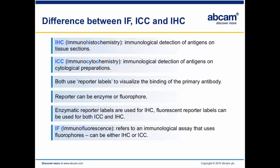I wanted to take a minute to talk about the difference between IHC, immunohistochemistry, and immunofluorescence. A lot of those terms get thrown around and I want to make it clear which is referring to which. When you see IHC, this is immunohistochemistry, and histochemistry involves immunological detection of antigens on a tissue section. Whereas if you see ICC, it's immunocytochemistry, referring to immunological detection of antigens on cytological preparations or cells. Both techniques use reporter labels to visualize the binding of the primary antibody to the antigen.